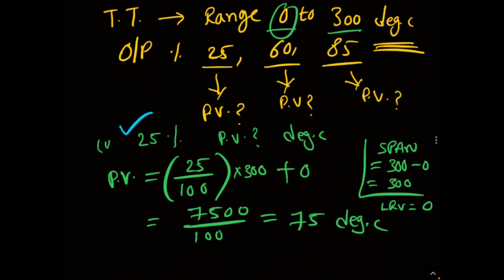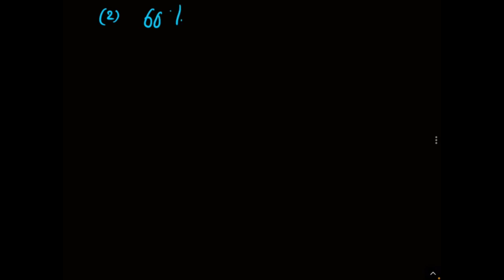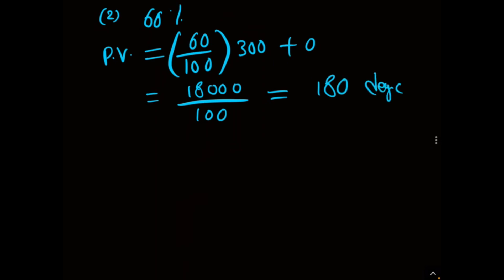When my TT output is 25%, the PV is 75 degrees centigrade. Next, Case 2: when my TT output is at 60%, what is the PV? PV equals 60 divided by 100, multiplied by span 300, plus LRV which is 0. That equals 60 × 300 = 18,000 divided by 100. So when my TT output is 60%, the PV is equivalent to 180 degrees centigrade.